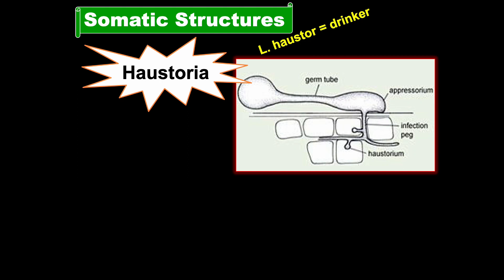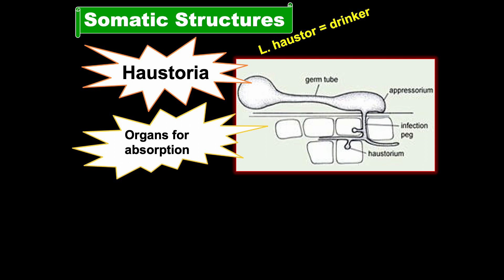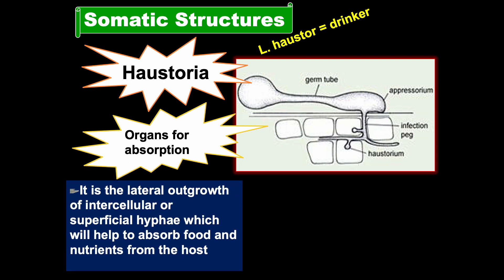Another somatic structure is the haustorium. The word came from the Latin 'haustor' meaning drinker. These are considered the most important organ for absorption of nutrients from the host cell. They are lateral outgrowths of intercellular or superficial hyphae that help absorb food and nutrients from the host cell. After the infection peg, the structure present within the host cell is the haustorium, which helps absorb nutrients from inside the host cell for growth, development, and completion of the life cycle.